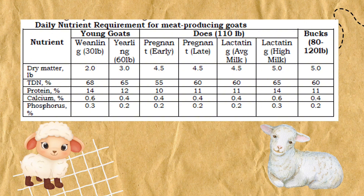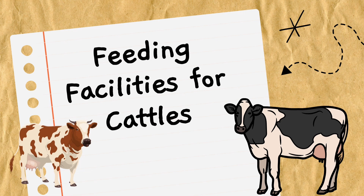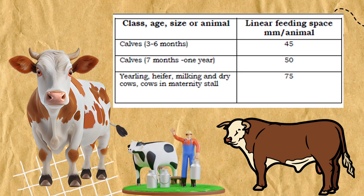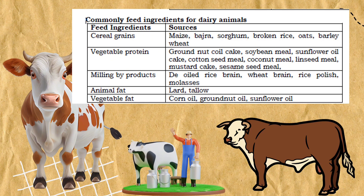This is the daily nutrient requirement for meat-producing goats. For feeding facilities for cattle, the feeding trough shall be placed along the sides of the pen and should either be made of wood or concrete. This table shows the class, age, size of animal, and the linear feeding space for animals, along with the commonly used feeding rations.